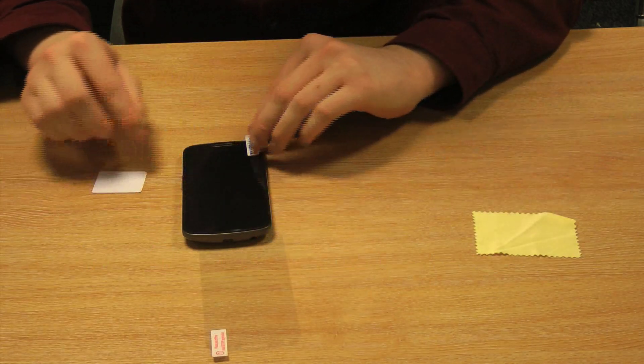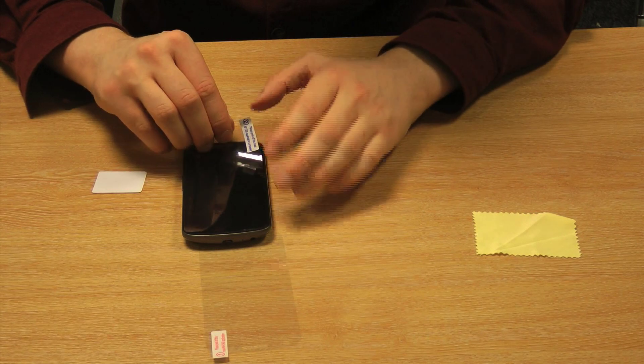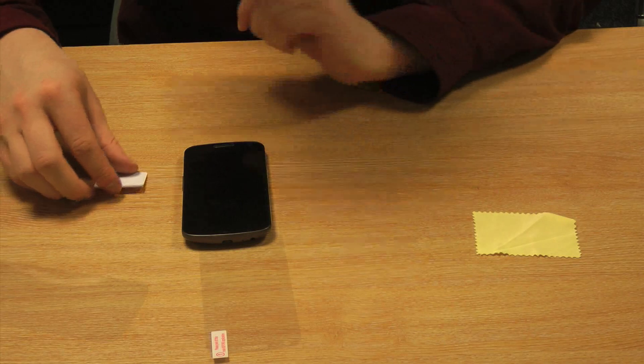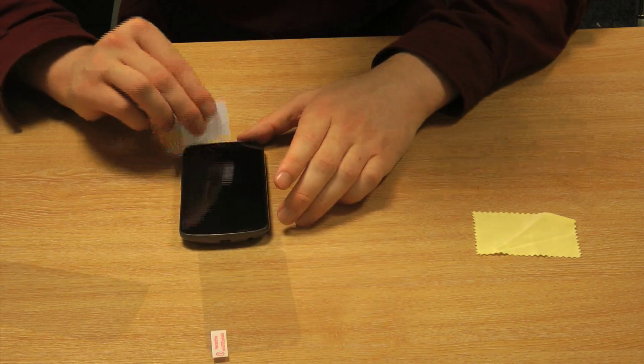We've got the vast majority of the bubbles out now. Still a few small ones remaining. Now we're just going to peel off this layer, just the final layer. As you can see, most of those bubbles have in fact disappeared.